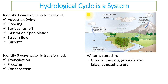You need to be able to identify ways that water is transferred. Wind transfers water from one place to another, blowing it across the land. Water is transferred through flooding across the land, through surface runoff, infiltration, or percolation into the ground, through the flow of water in streams and rivers, and in the sea and oceans through currents. Water is transformed through transpiration, where water evaporates from plants going from liquid to gas form. Water is frozen, going from a liquid to a solid as snow or ice. Water vapor can also cool and condense back into water in clouds.